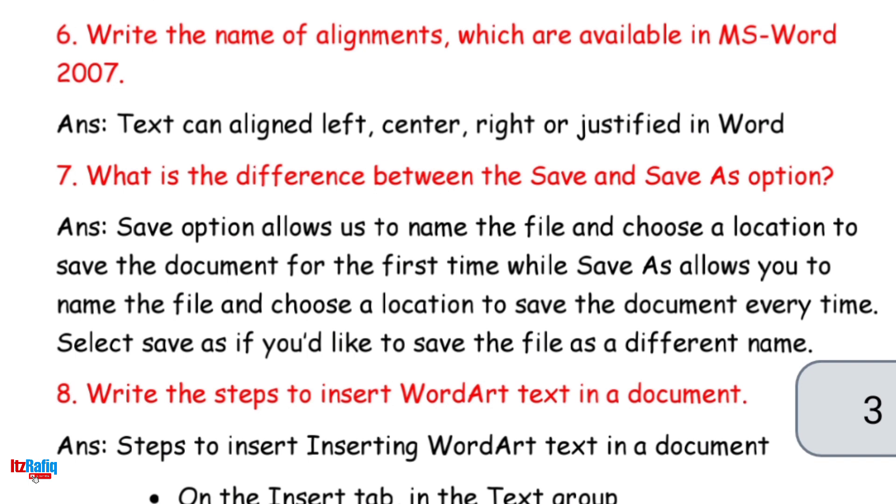6. Write the name of alignments which are available in MS Word 2007. Answer: Text can align left, center, right or justified in Word.